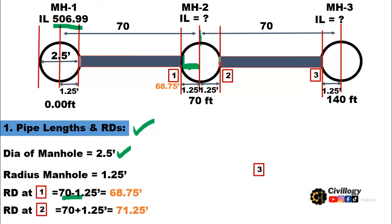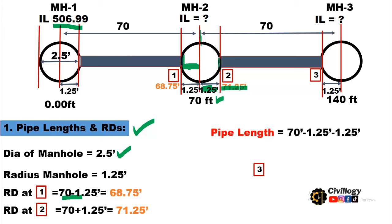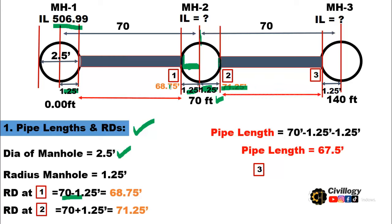Similarly, the RD at point 0.2 — the start of the second segment of pipelines — will be 70 plus 1.25, which equals 71.25 feet. The pipe length between two manholes will be the total center-to-center distance of 70 feet minus 1.25 on each side, giving a pipe length of 67.5 feet.